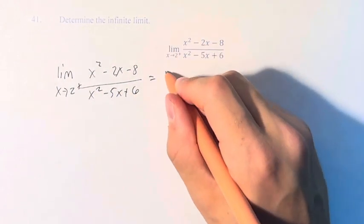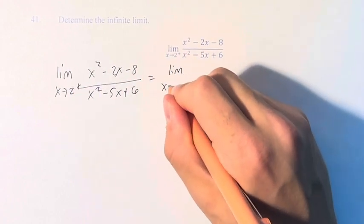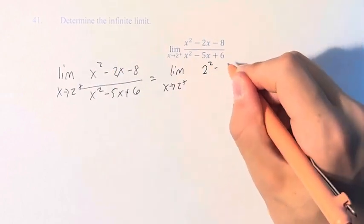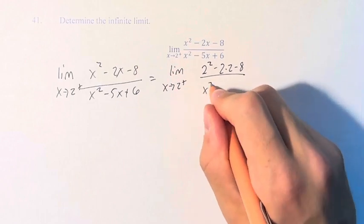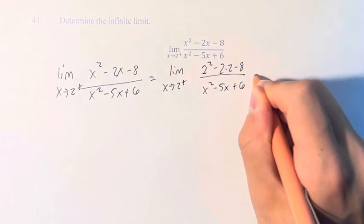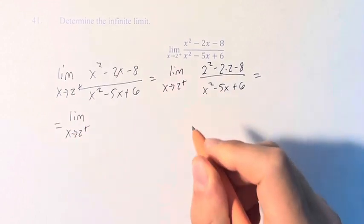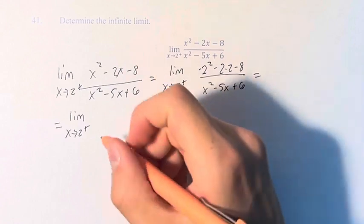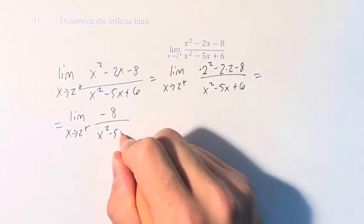If we just say that this is equal to the limit as x approaches 2 from the right of 2 squared minus 2 times 2 minus 8, and then leave the denominator as it is for now, we just get that the limit is the same, where we have 4 minus 4 minus 8 is negative 8 over x squared minus 5x plus 6.